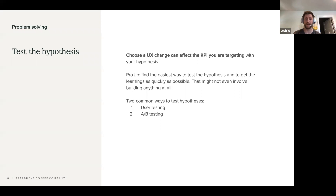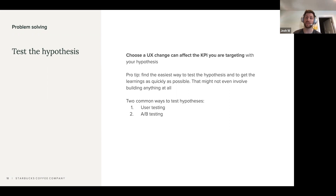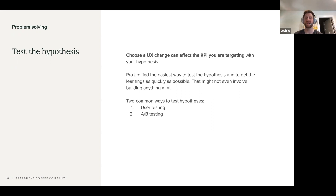You have to pick something very specific — choose a singular UX change that can actually affect the KPI you're targeting with your hypothesis. For instance, making a change in the app's settings section doesn't actually have implications for the number of accounts created. The change has to tie directly to the KPI you're thinking about. I always recommend finding the easiest possible way to test your hypothesis and get your learnings as quickly as possible — sometimes that means not even building anything at all. There are kind of two ways to test your hypothesis: user testing and AB testing.